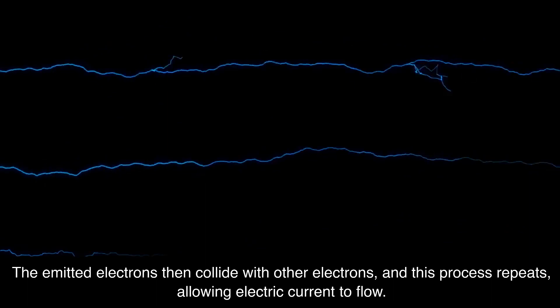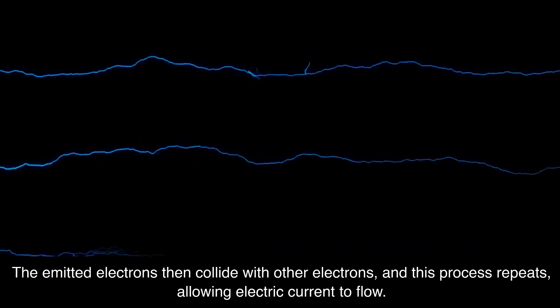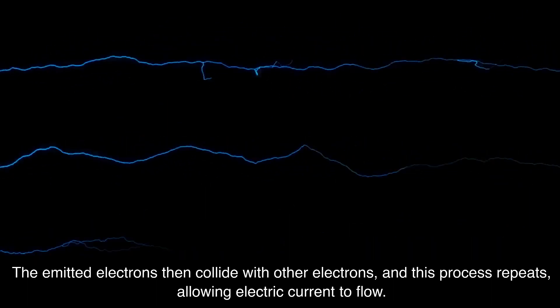The emitted electrons then collide with other electrons, and this process repeats, allowing electric current to flow.